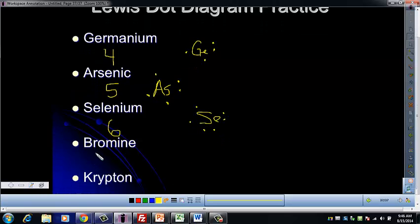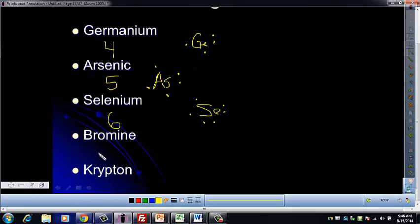Okay, now we have bromine. Go ahead and pause and look for bromine. Bromine has 7 valence electrons. Alright, so in this case the first two go together. Number 3 goes here, number 4 on the next side, number 5 on the next side, 6 back here, 7 here. So you should have 3 pairs and 1 single.